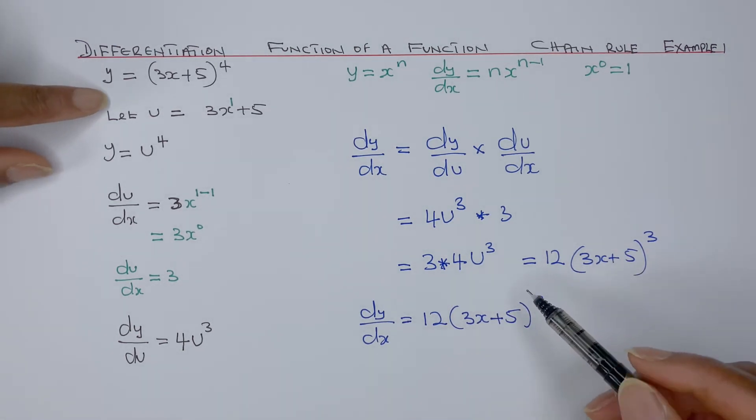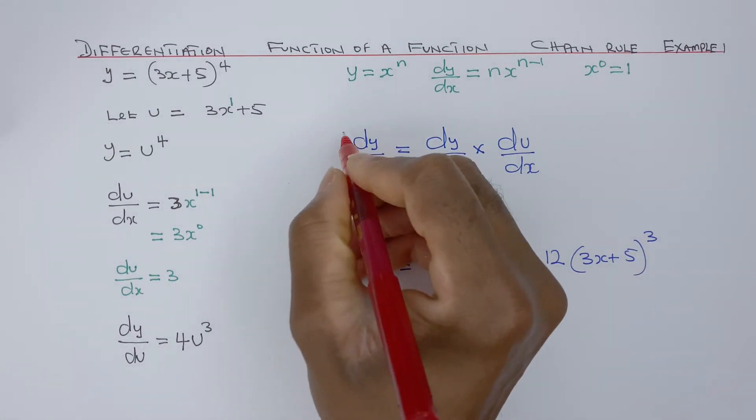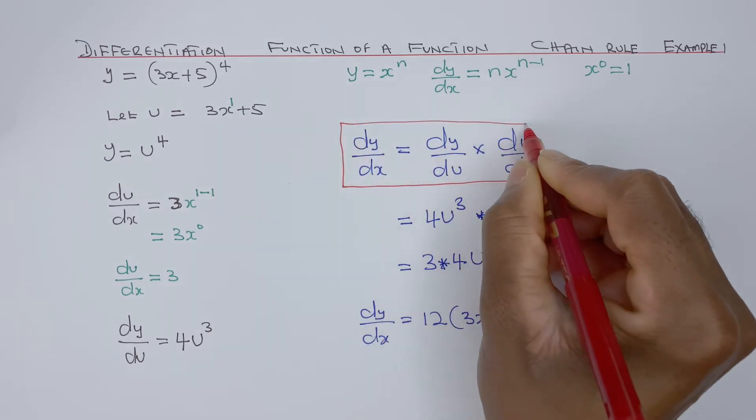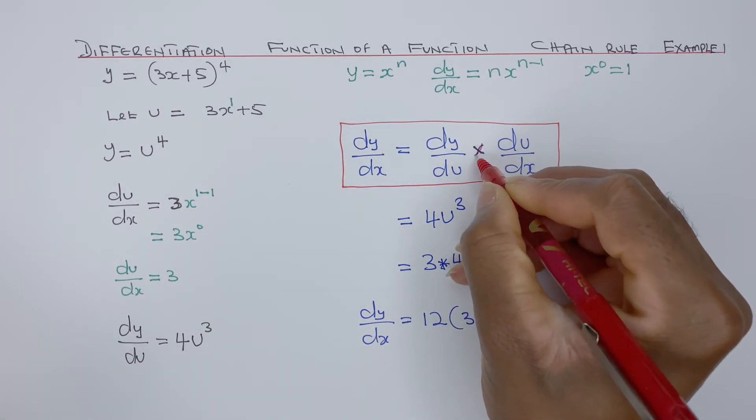We could have done it quickly without actually applying the chain rule here. So that is the chain rule formula.